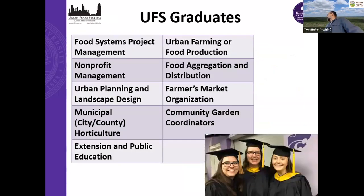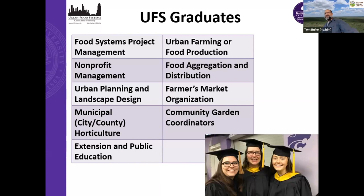We try to prepare our students for a number of different career fields, and we've had students land in all of these different areas: project management, food production — though as Amanda says, if you plan on farming you don't need a master's, but we'll still take people who want one — nonprofit management, food aggregation. We've had students go on to be organic inspectors, state ag agents, and things like that.